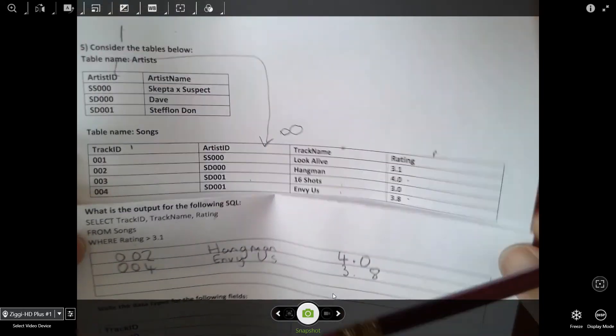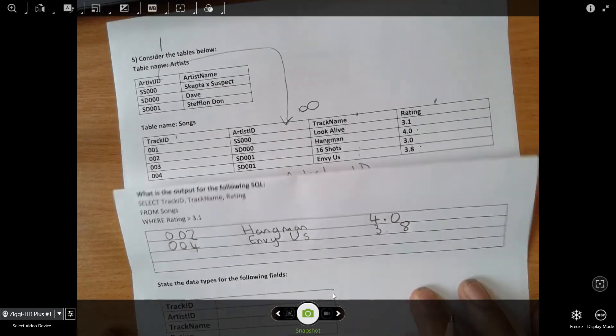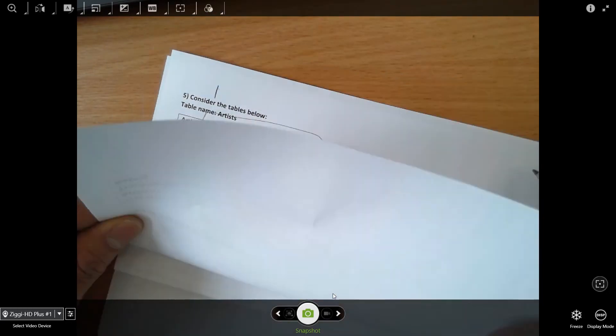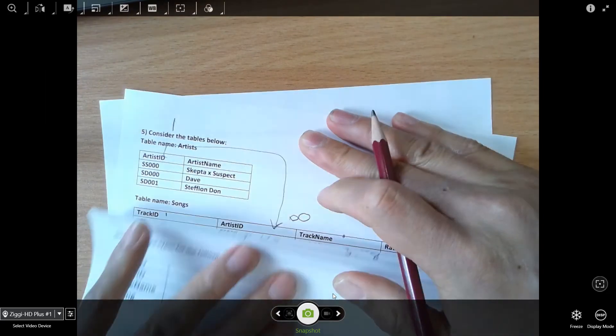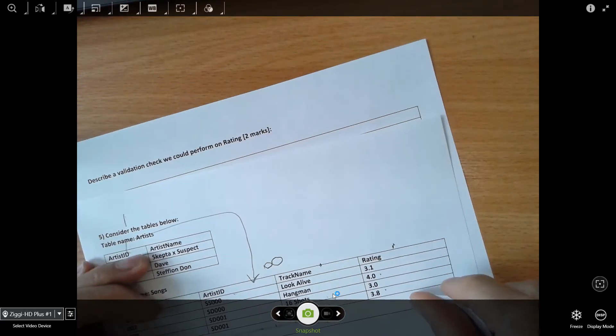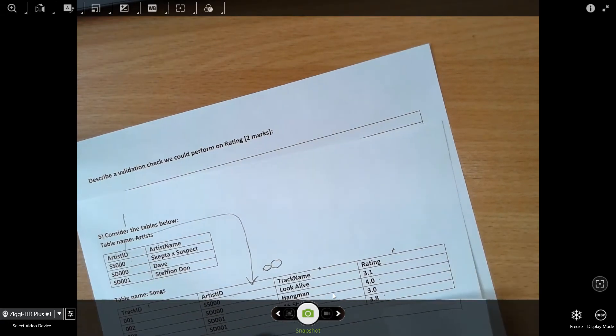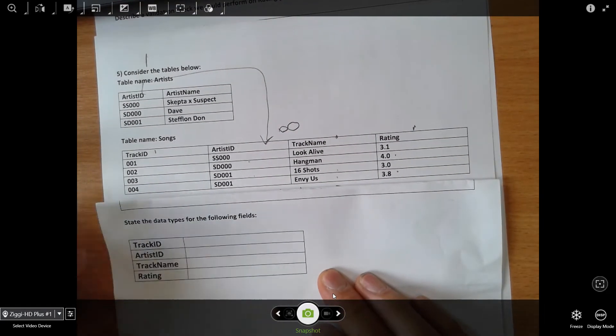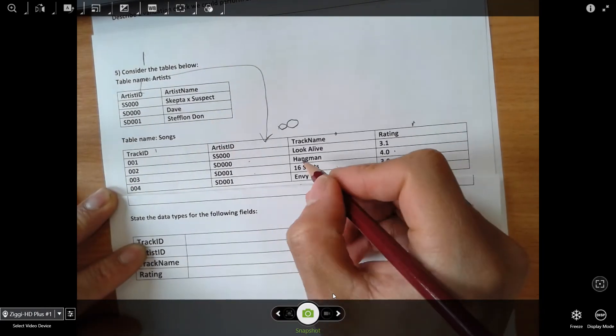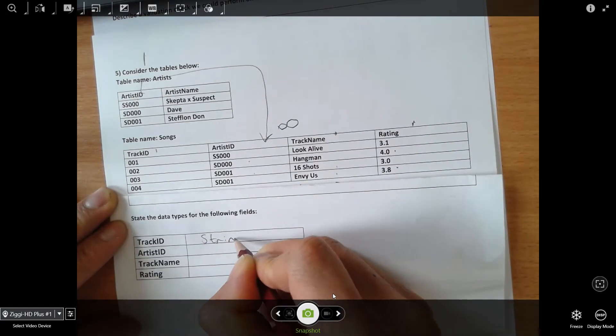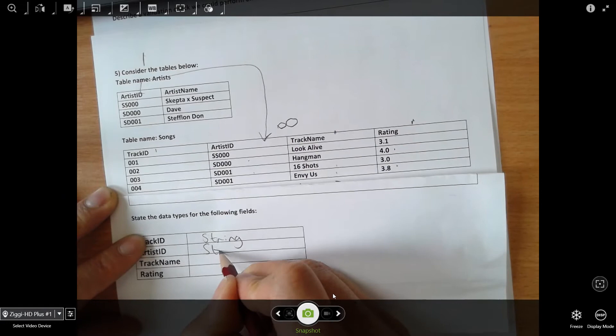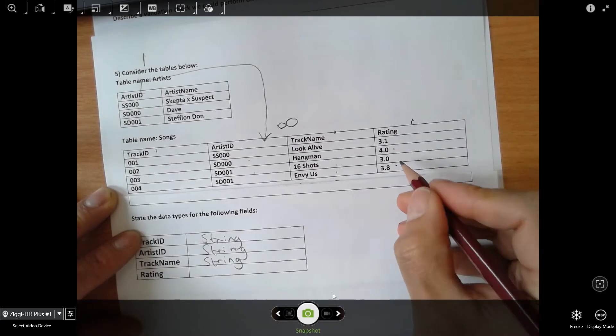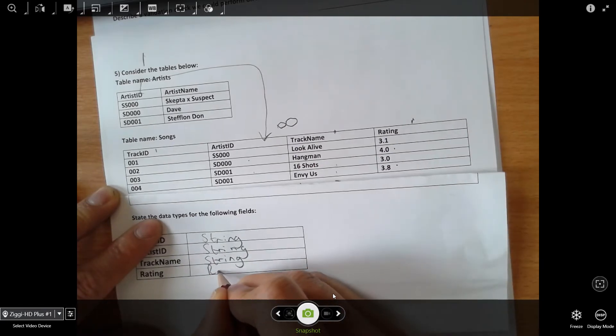State the data types for the following fields. Track ID is a string - although it's got numbers in it, integers cannot start with a zero, so therefore it's a string. Artist ID is a mixture of characters and numbers, so it's also a string. Track name is also a string. And rating, because it's got a decimal in it, I would say it's a real.